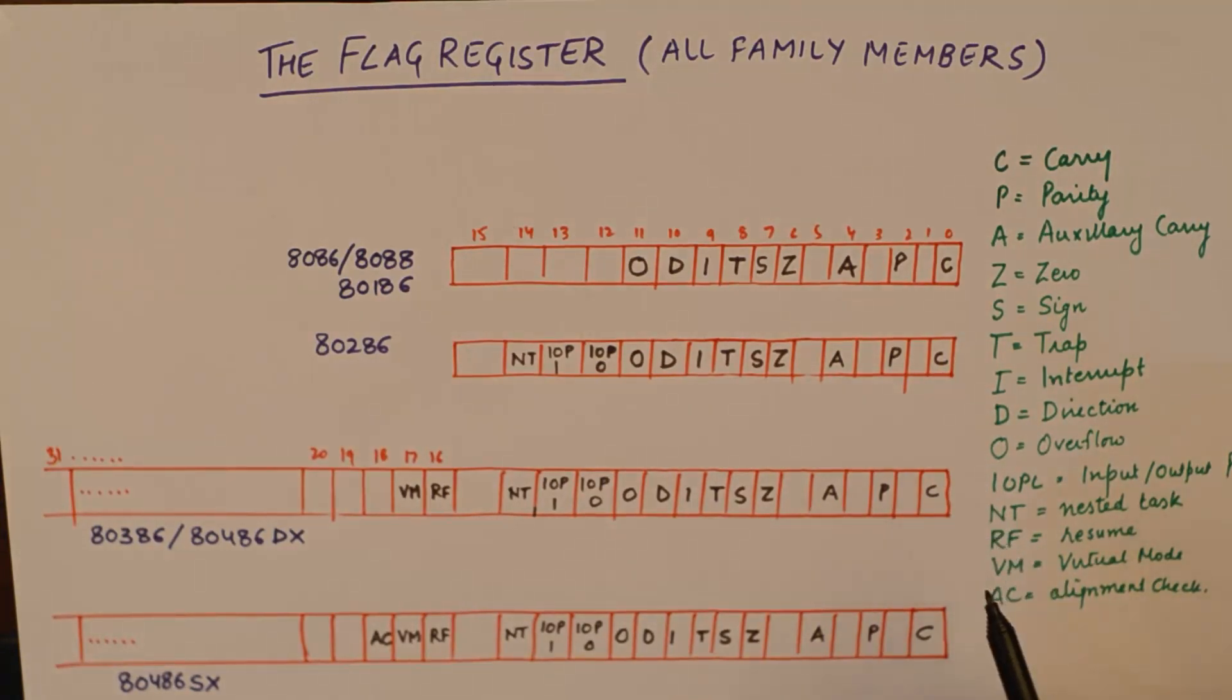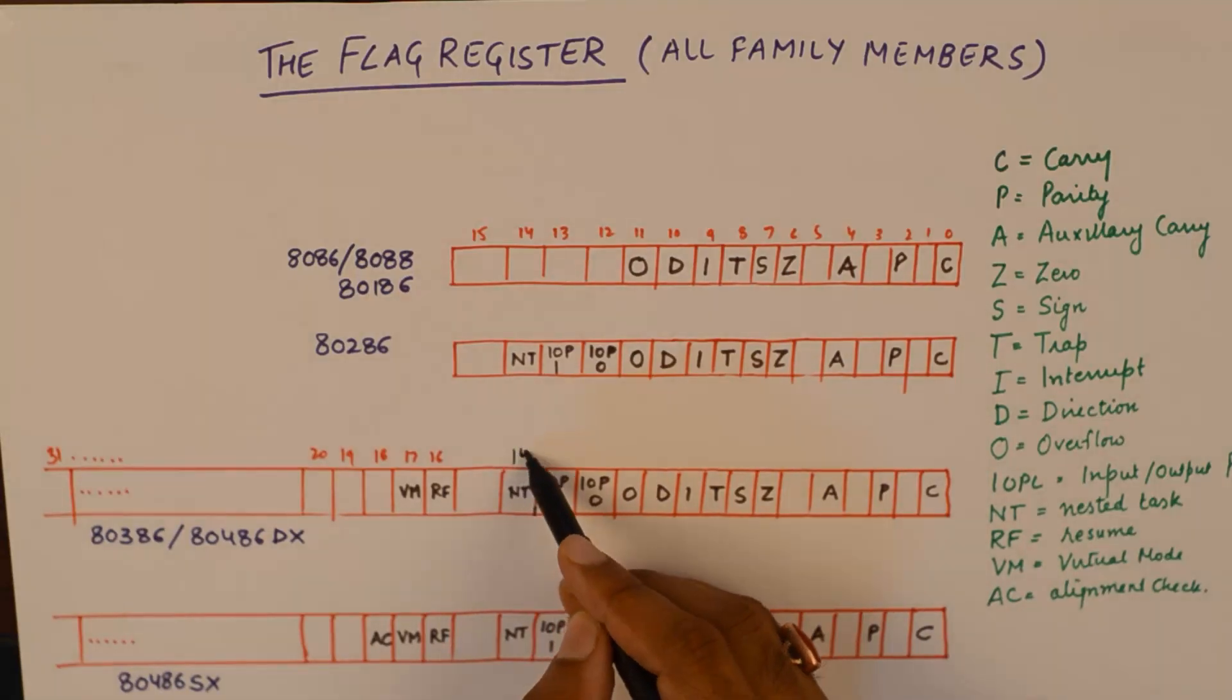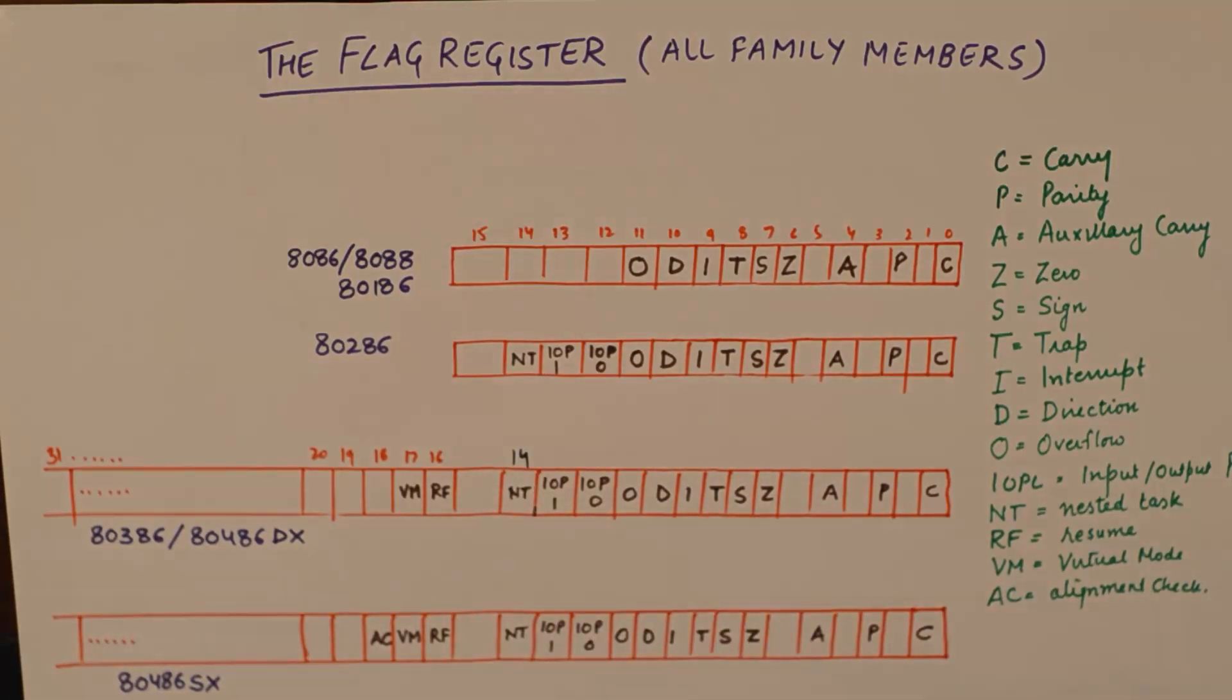Then we move on to 80386 and 80486. What you see here is all the flags are intact. All the flags are positioned at the same bit positions. For example, carry was at zero right from the very beginning and up to bit number 14 everything remains the same. But the addition of new flags takes place at bit number 16, 17.